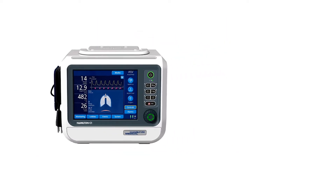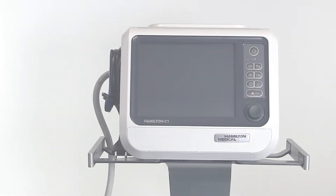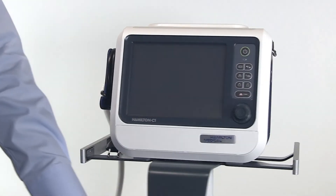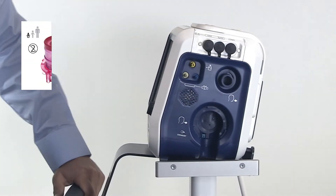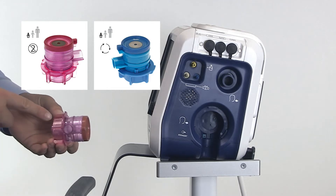We'll use the example of the Hamilton C1 to show you how to set up the ventilator, how to initiate neonatal ventilation, and how to adjust the neonatal ventilation modes. It works the same way on the Hamilton T1 and Hamilton MR1. Make sure you are using a dedicated neonatal expiratory valve, which has the same membrane as the other valves but a smaller internal diameter.